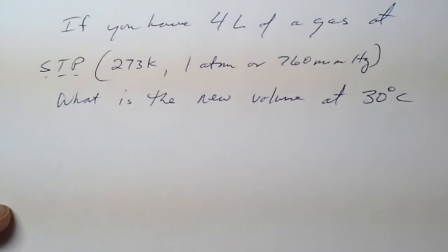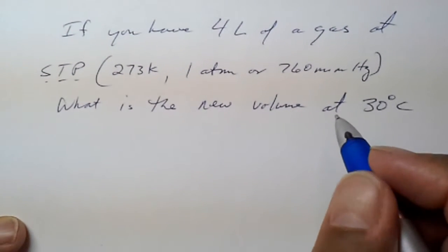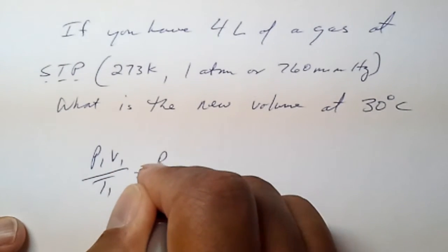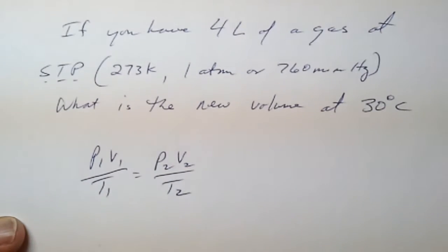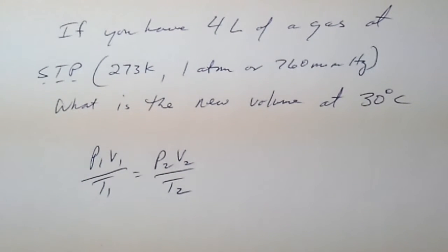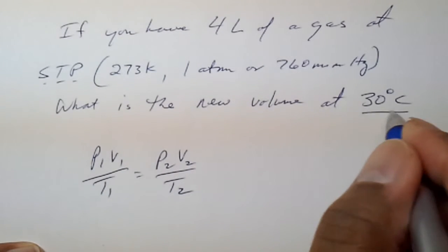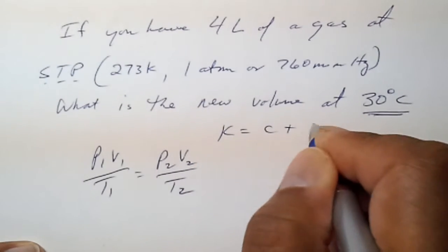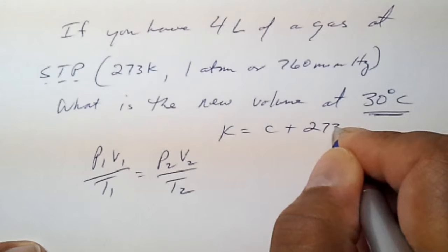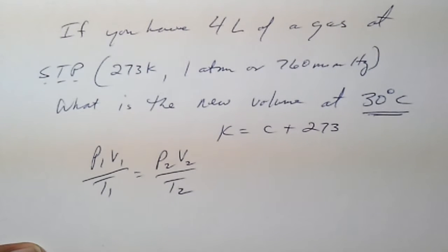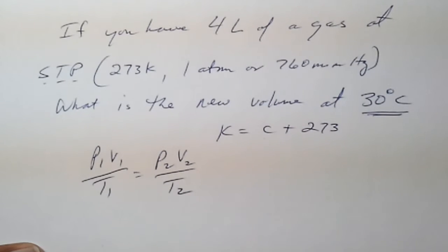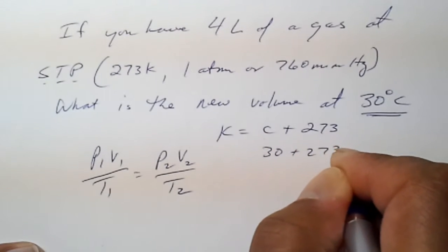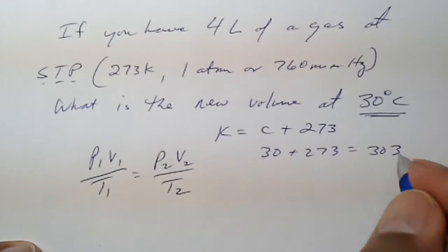If temperature is changed to 30 degrees Celsius. We have our equation P1V1 over T1 equals P2V2 over T2. We want to make sure our units are all the same, so we'll need to convert the Celsius into Kelvin. Kelvin is always converted, or Celsius is always converted to Kelvin by simply adding 273. And so that would be 30 plus 273 is 303 degrees Kelvin.